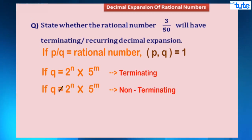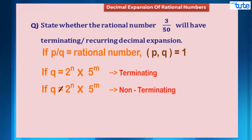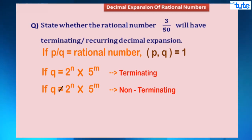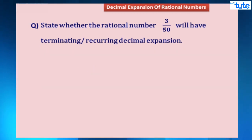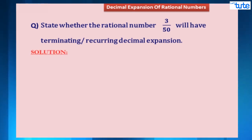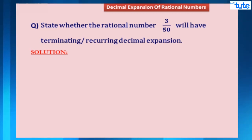Similarly, if q is not of the form 2 raised to n into 5 raised to m, then the decimal expansion of the rational number will be non-terminating or repeating. Now with this information, let us move on to our solution.